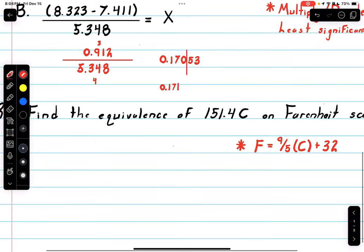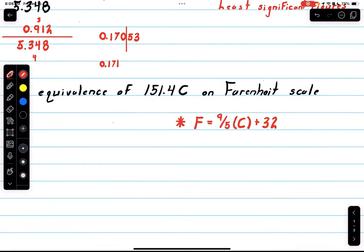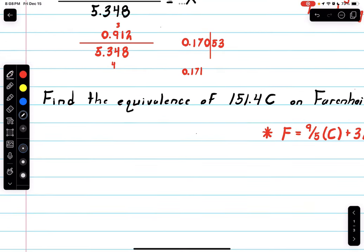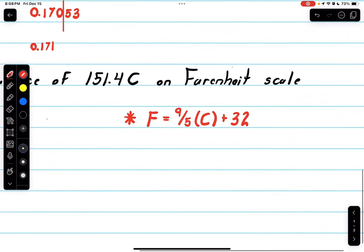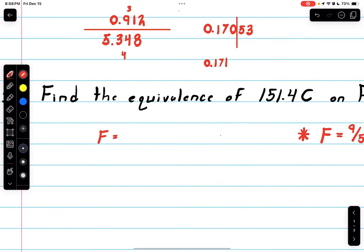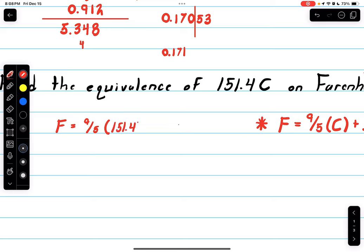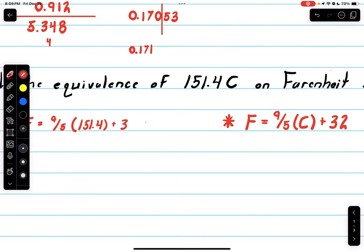For this we have to find the equivalence of 151.4 Celsius on the Fahrenheit scale. On quizzes and lecture quizzes we actually have to memorize, but on actual exams it will be given. It's always good to know. If we have Celsius we plug it into this equation: F = 9/5(151.4) + 32. Give me one moment and I'll get back with the calculation. I come out with 272.52.